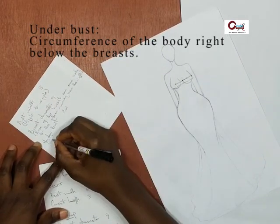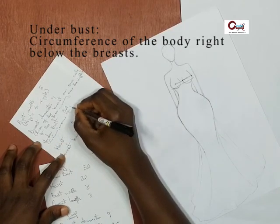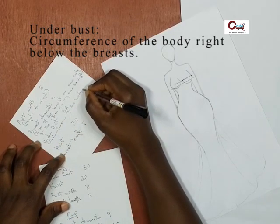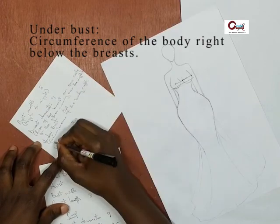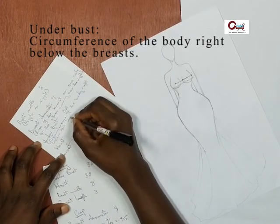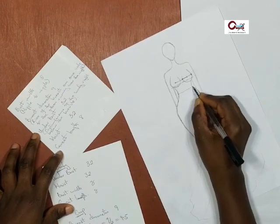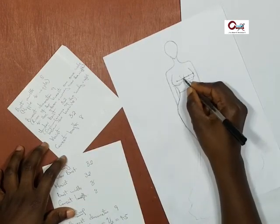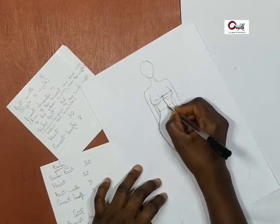Next, underbust. Right below the breast, measure around the body. If it's possible, ensure the breast is not sitting on the body. Even when you are measuring the breast diameter, ensure it's not sitting on the body. The waist, you know that already.